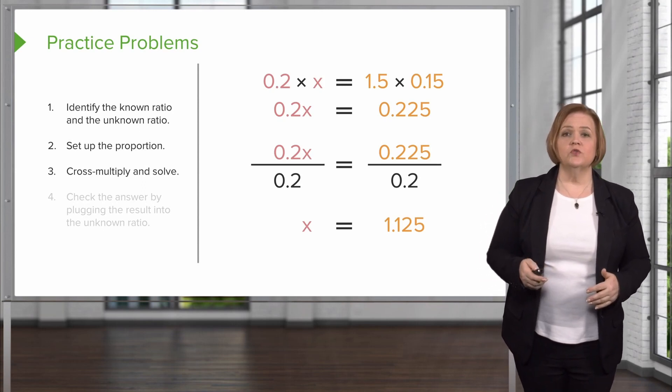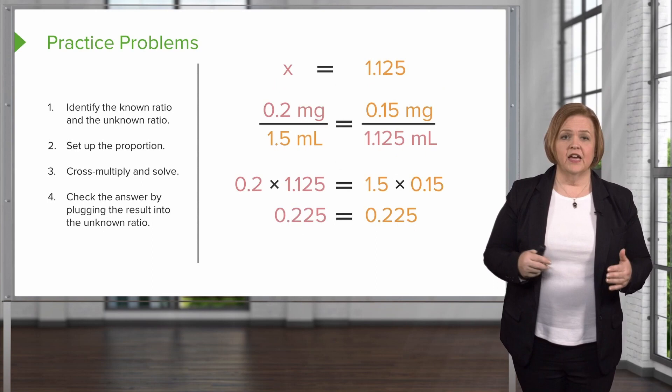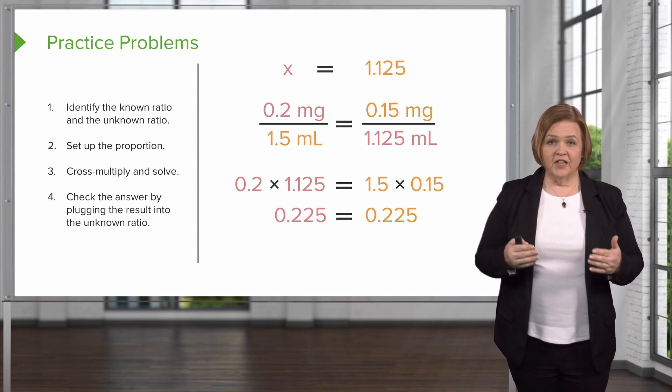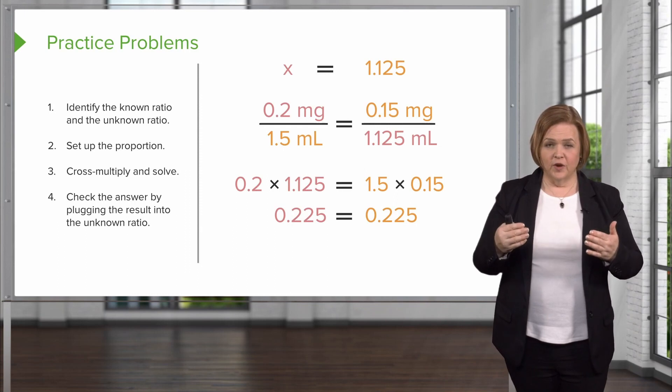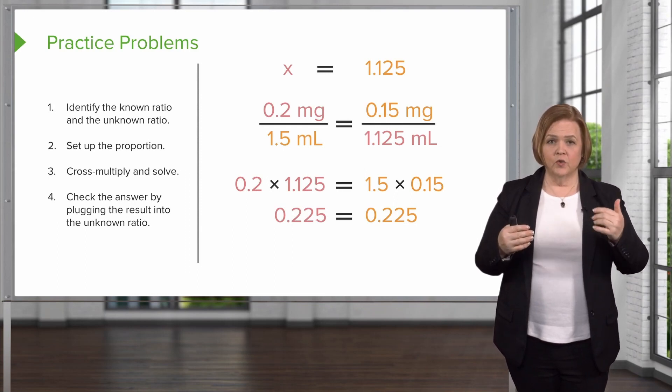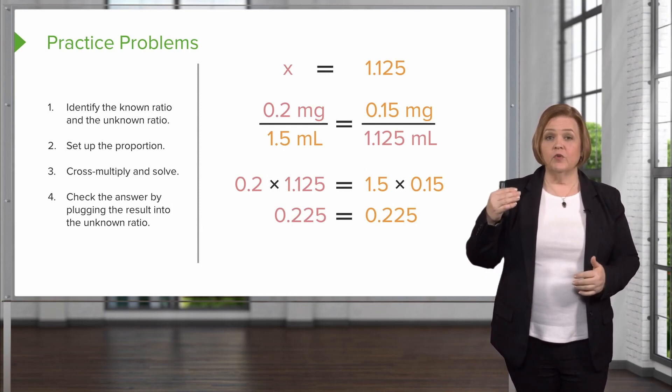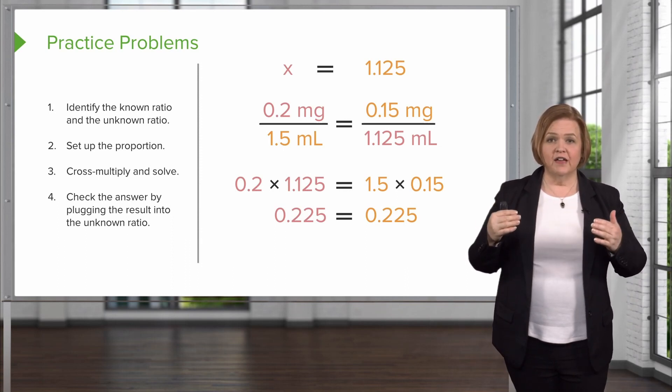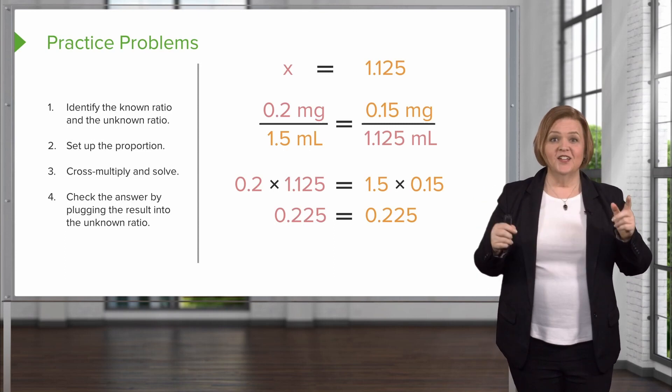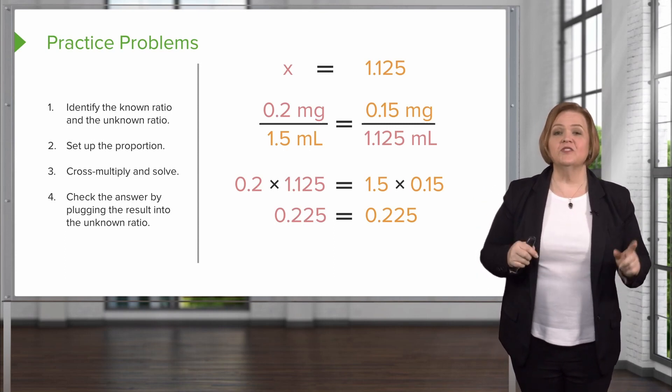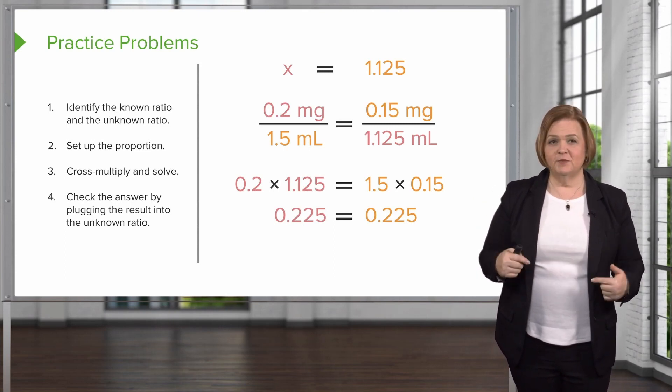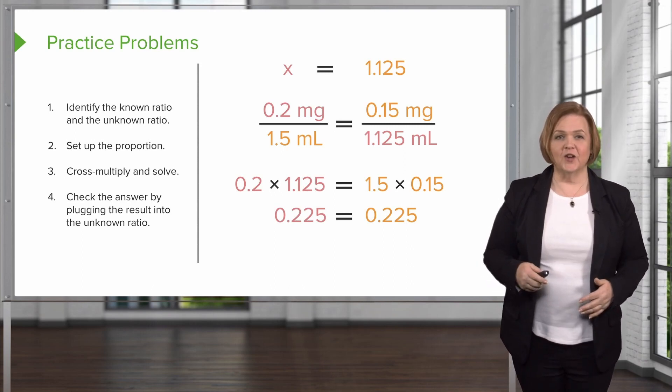x equals 1.125. Now you check your answer by plugging x in, right? So that's why we have this new representation. 0.2 over one and a half, 0.15 over 1.125. When you work out the math, sweet, 0.225 equals 0.225. Absolutely. Good job. Got that one. Correct.